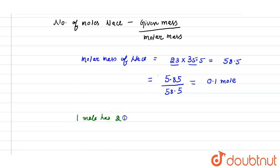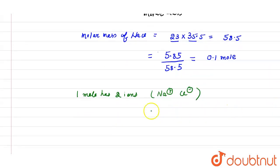Now, as we know that one mole has two ions. NaCl has Na positive and Cl negative - one is cation and another is an anion. So 0.1 mole will have 2 into 0.1, which will be 0.2 moles of ions.